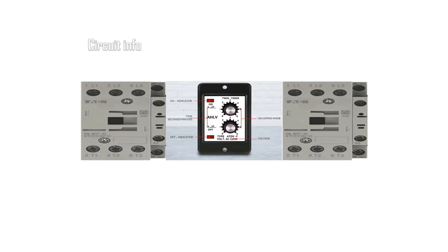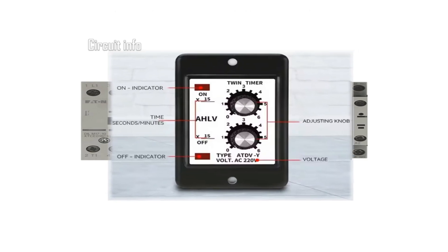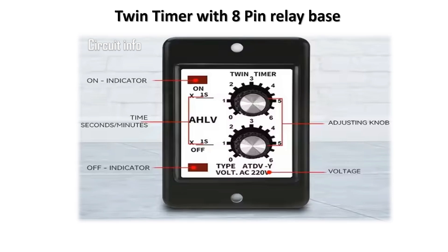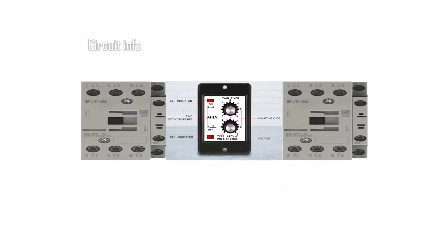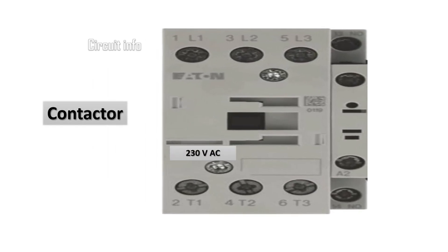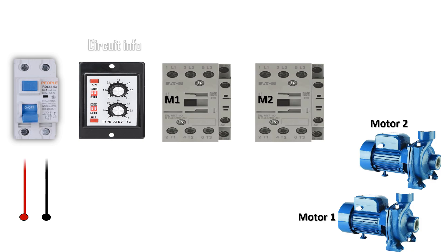Here you can see the circuit diagram. On the left we have the main MCB for protection. Next we have the twin timer, which alternates between motor 1 and motor 2 after the set time interval. We are using two contactors, M1 and M2, which are connected to each motor. The twin timer controls these contactors, ensuring only one motor runs at a time.